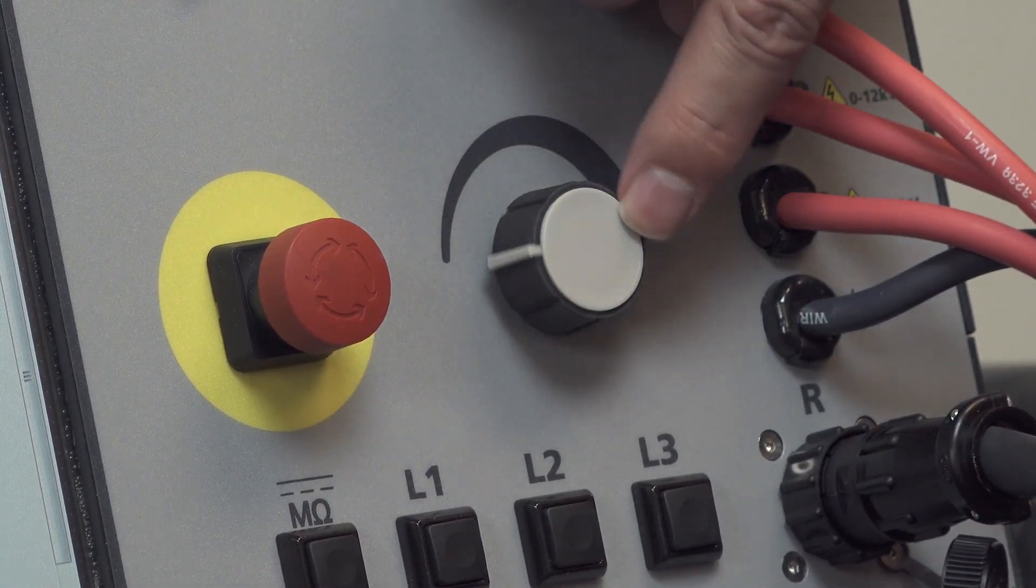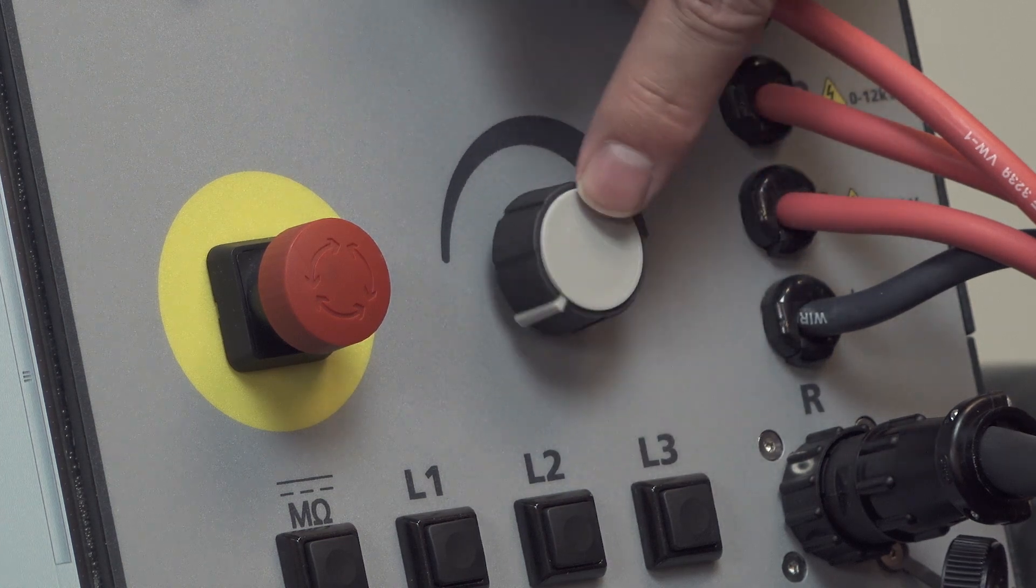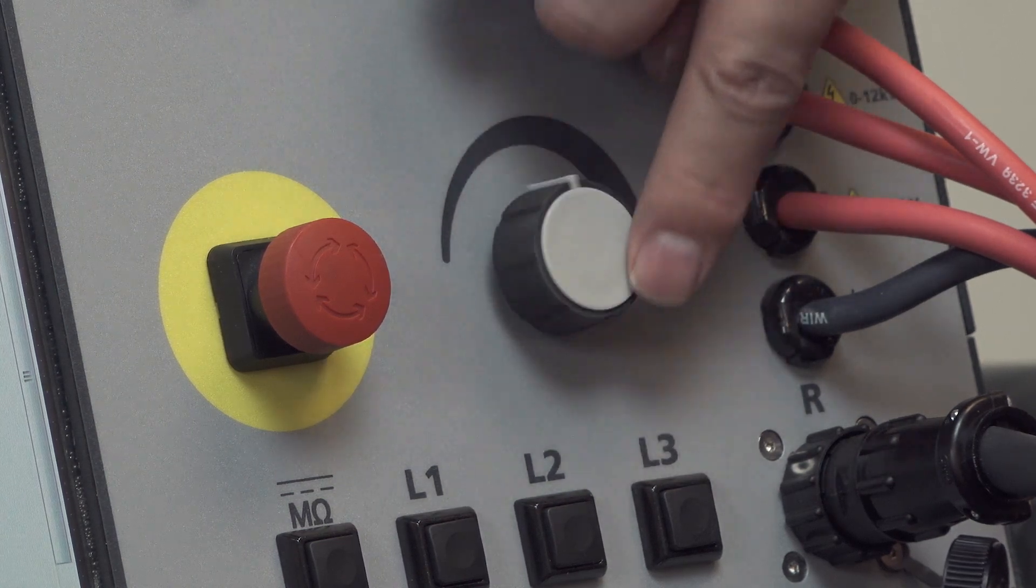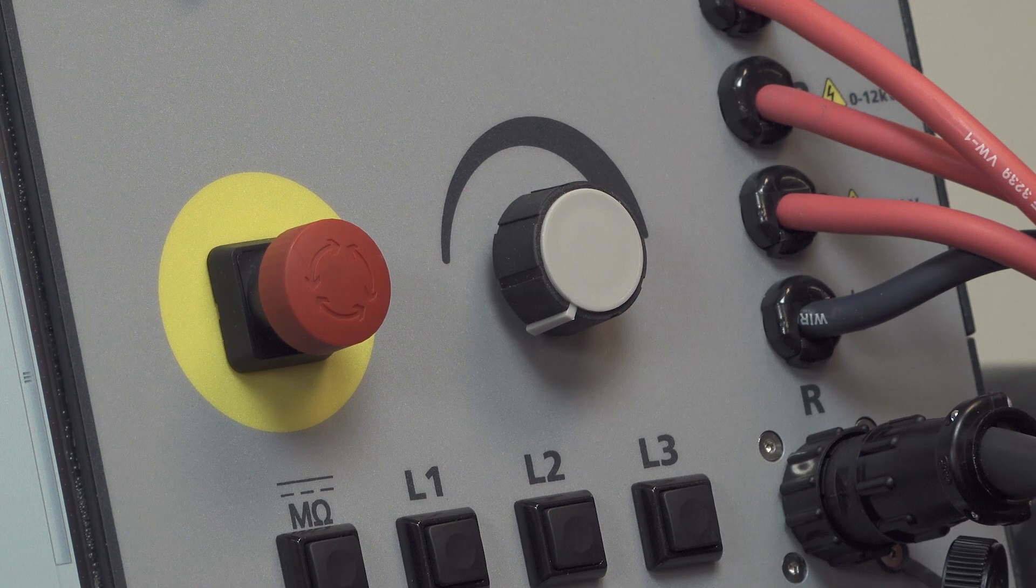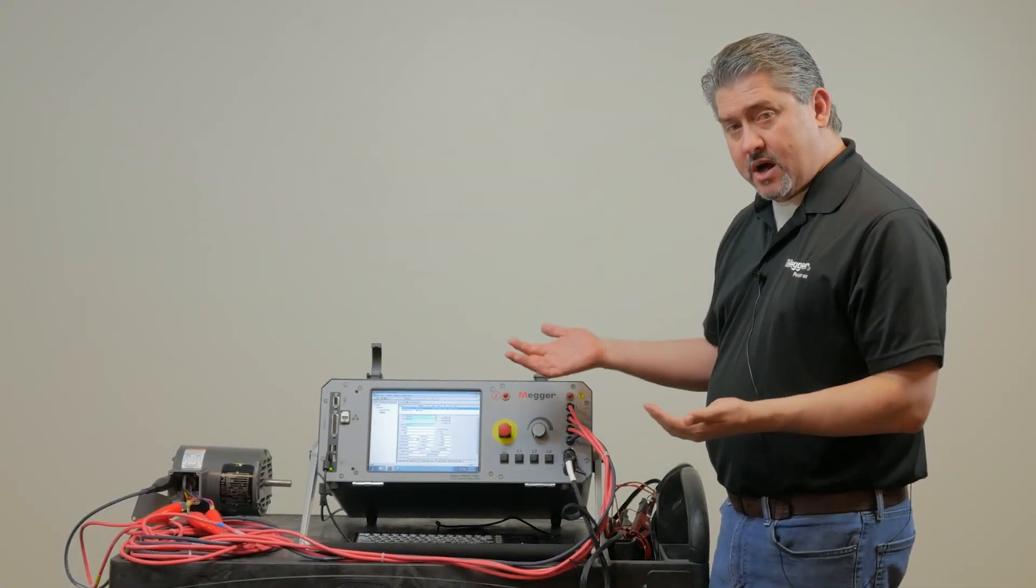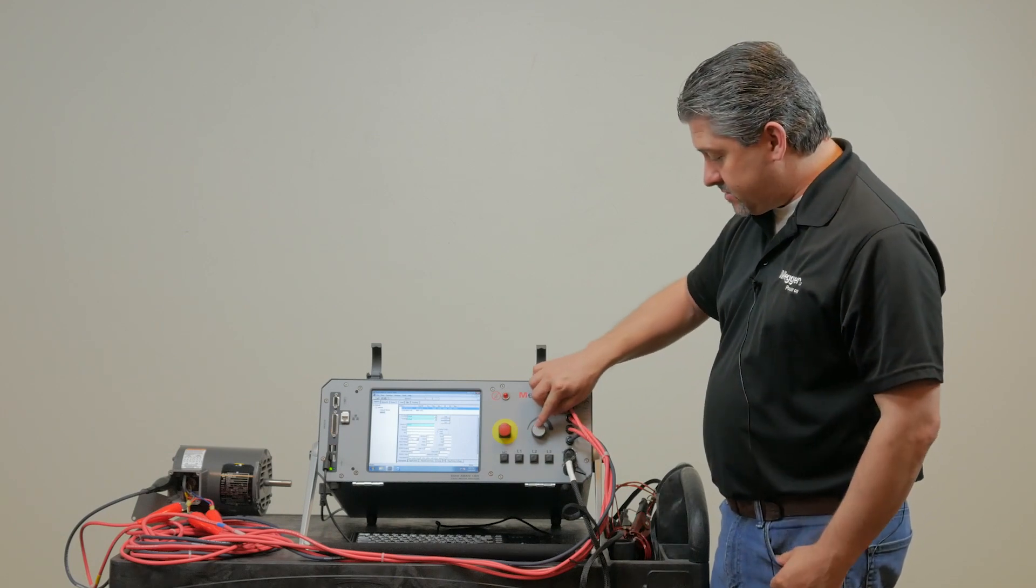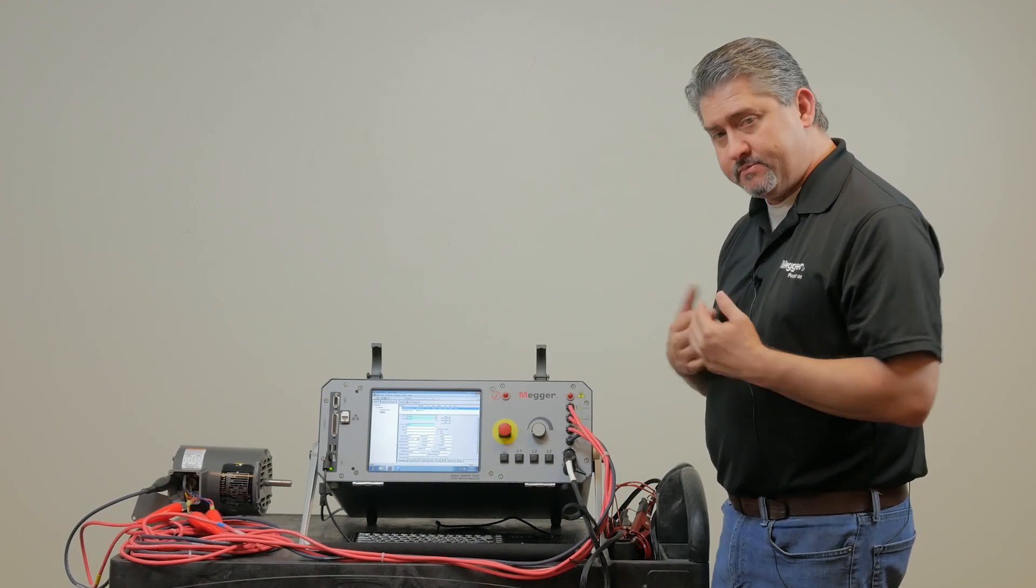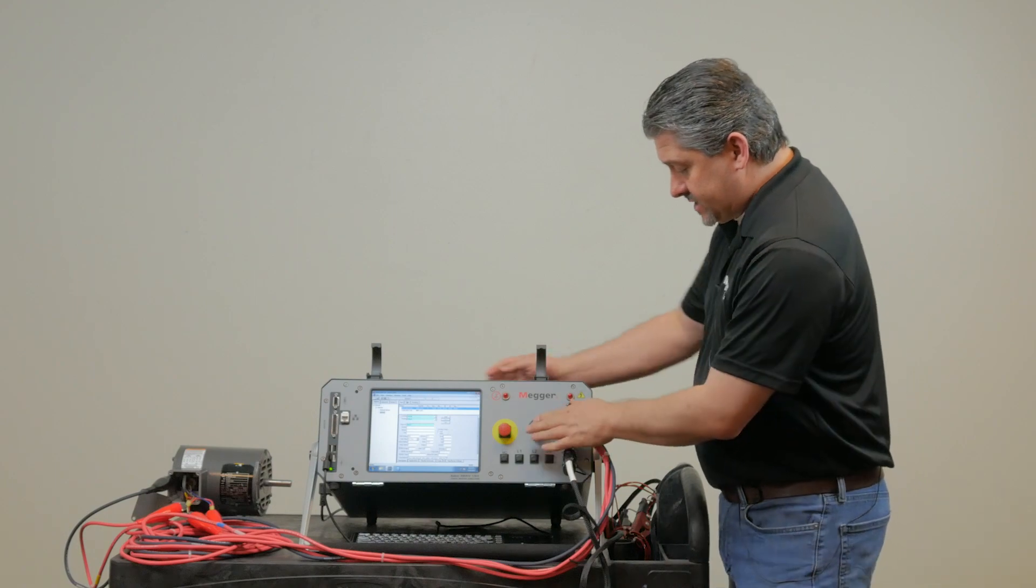To the right here we have a potentiometer, which is used to manually control voltage in the event that you want to perform a manual DC or surge test. Since the tester is completely automated, we recommend automatic operation, but there are certain cases where manual testing might be desired, and that's what that's provided for.